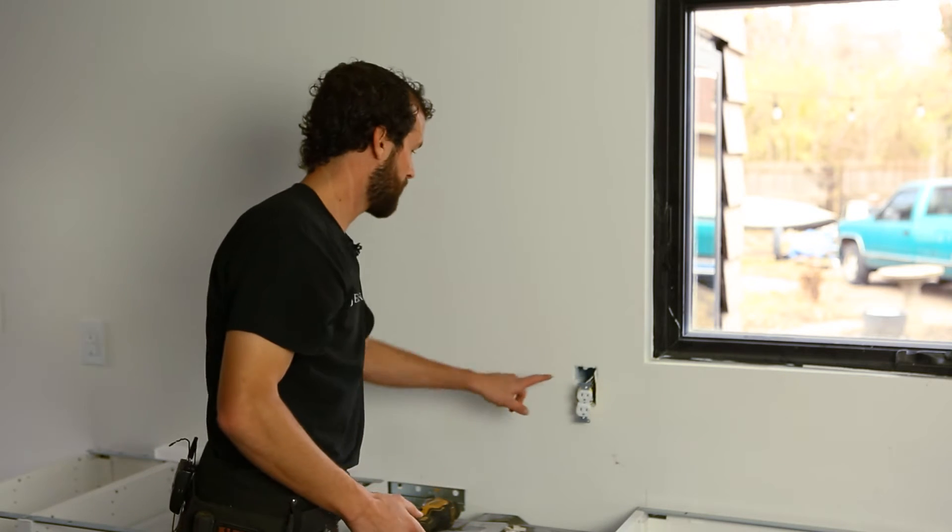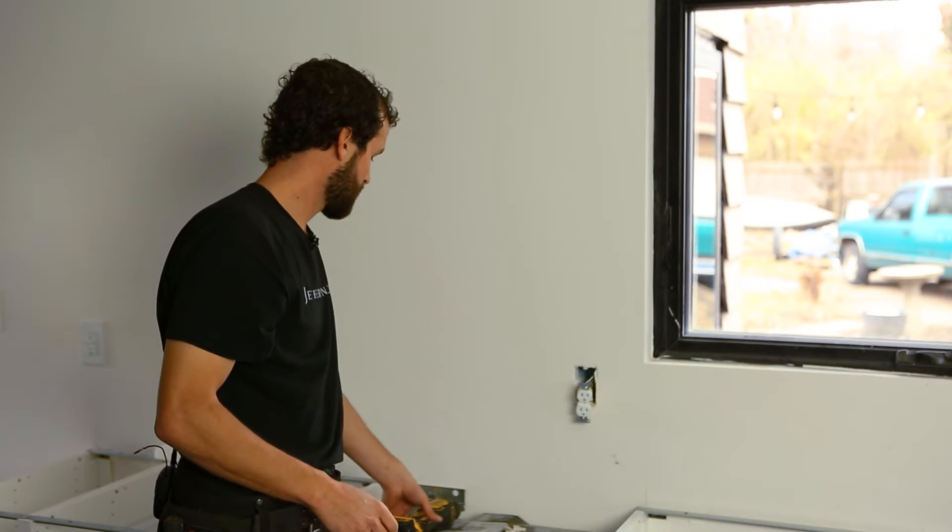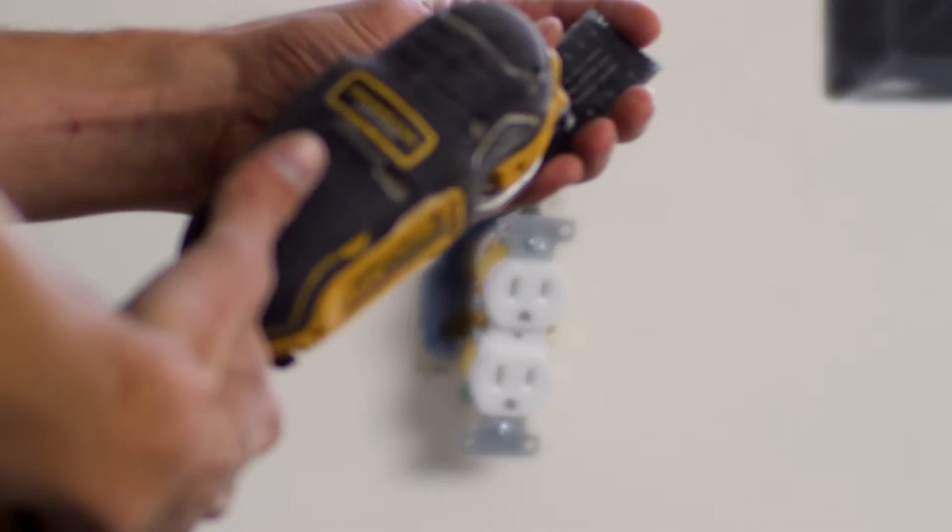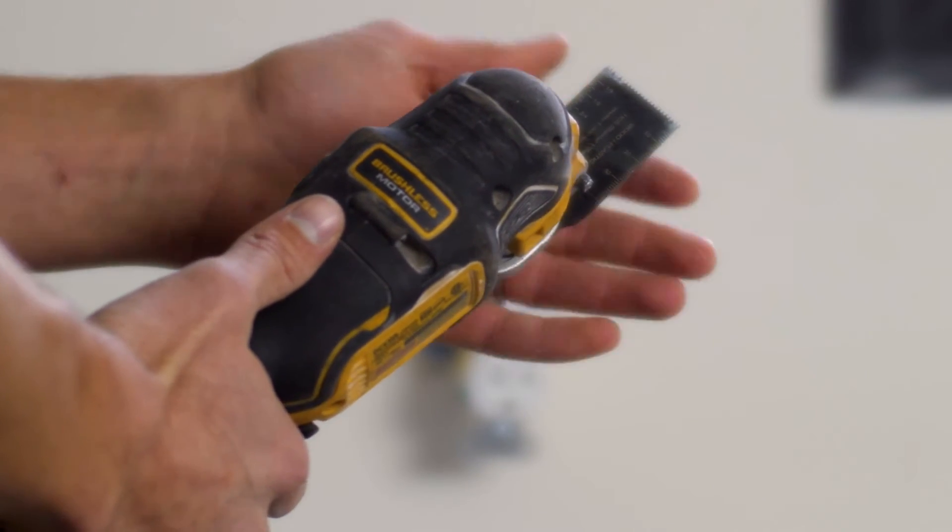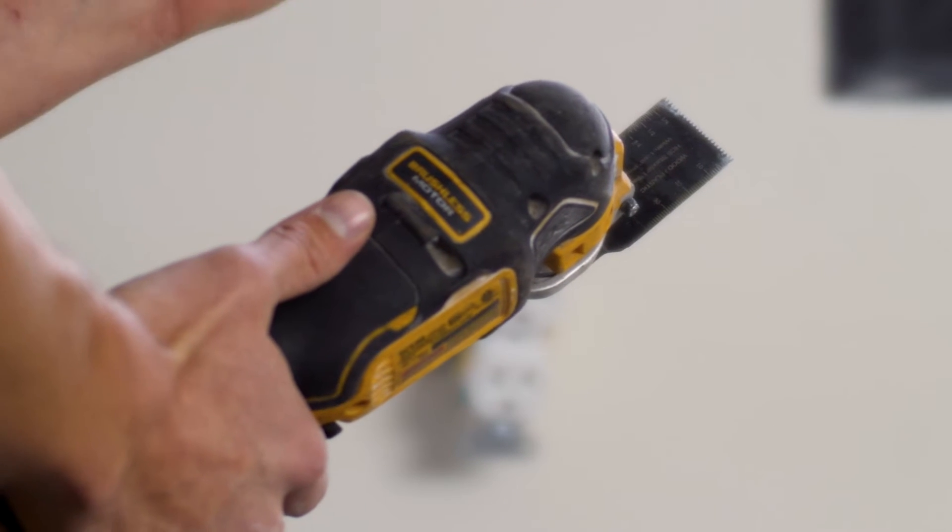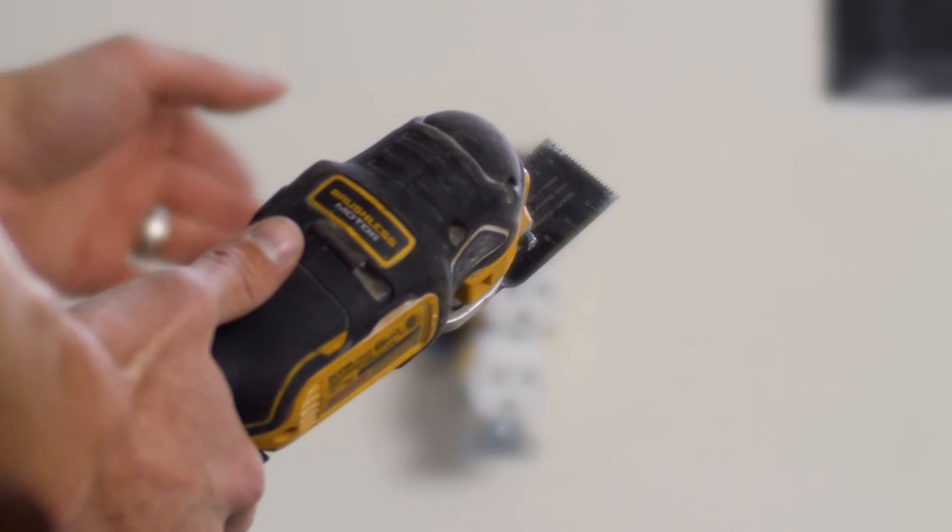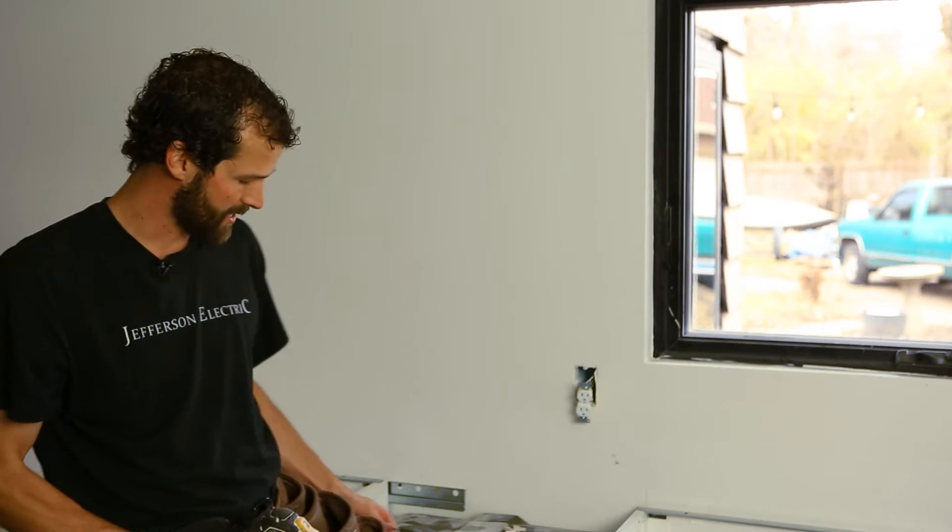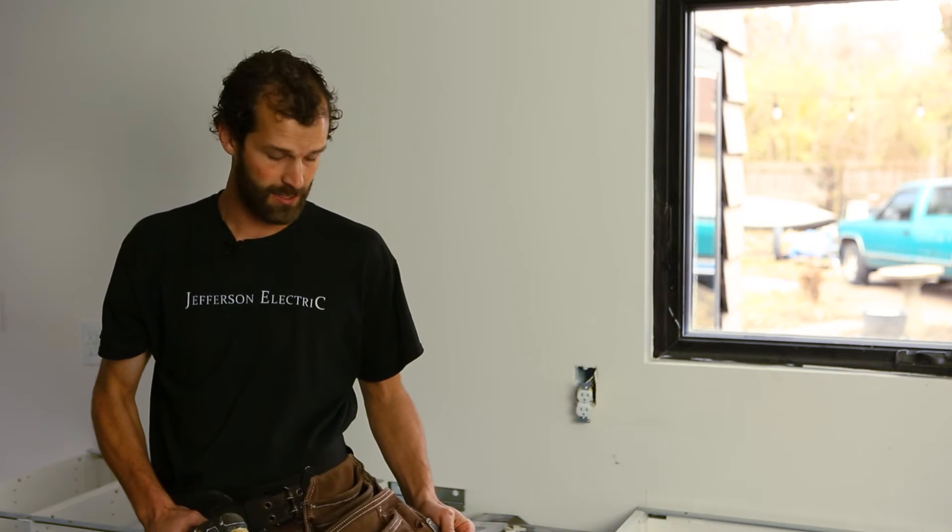I'm going to use my DeWalt oscillator. It's got a blade end. Many of you have seen this tool with three degrees of oscillation back and forth. I'm going to carefully cut out that box. The other thing I want to call attention to here before I do that is I've got a hammer hook on my tool belt.